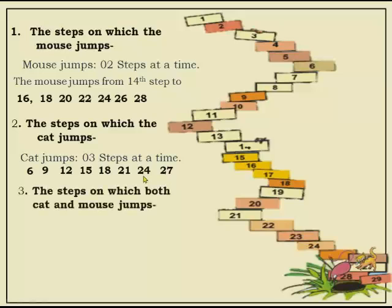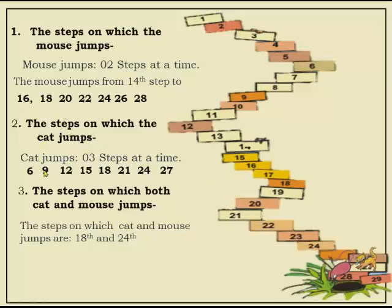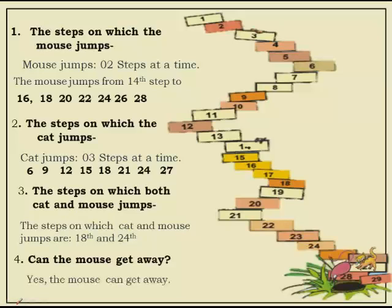Now the question asks: which steps do both the cat and mouse land on together? Looking at both sequences, the common steps are 18 and 24. So yes, the mouse can get away safely — it reaches step 28 and hides in the hole before the cat catches it.